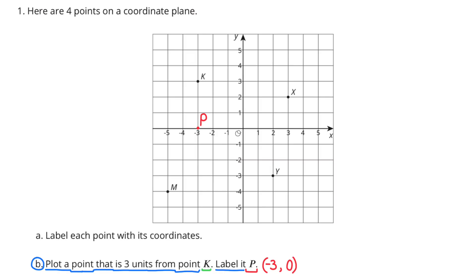Part B: Plot a point that is 3 units from point K and label it P. I put negative 3 and 0 — that's 3 to the left along the x-axis and 0 up or down on the y-axis. There are many choices to choose from; this is just the one that I came up with.